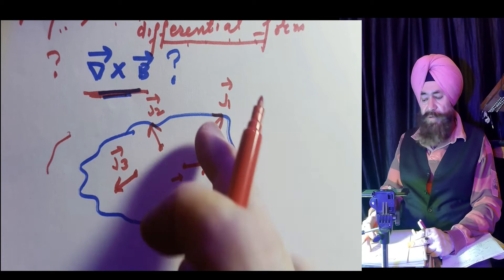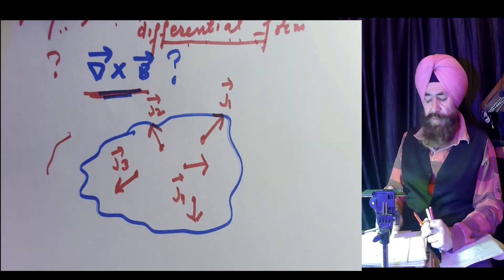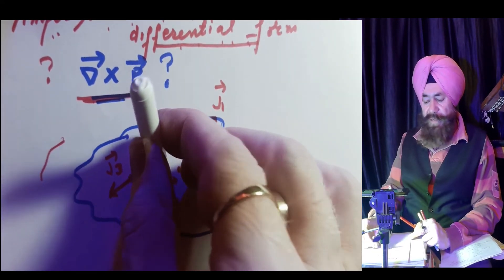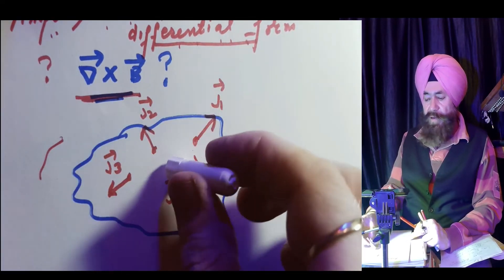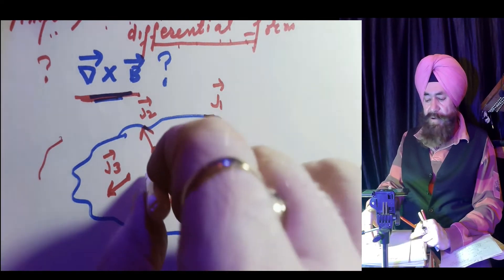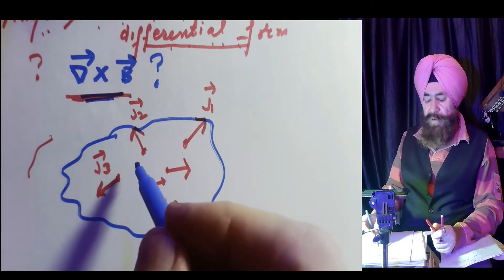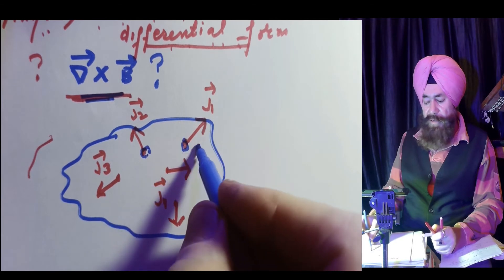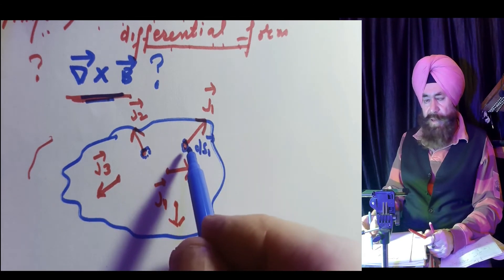These are represented by J1 vector, J2 vector, and so on. The cap of my pen shows the direction of the current densities — maybe this direction, maybe this direction. Now, there are very small areas at different locations, like dA1 vector. Area is a vector quantity, and its direction is perpendicular to the plane of the surface.